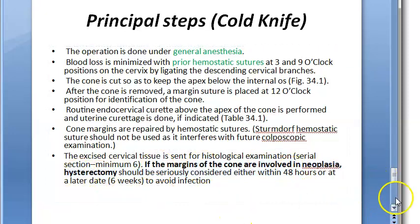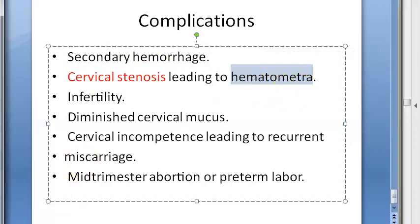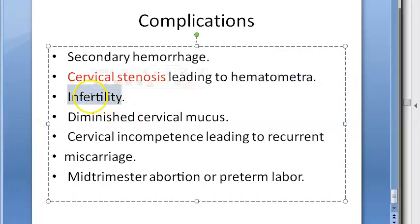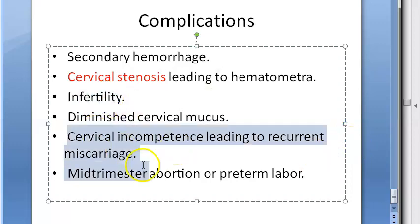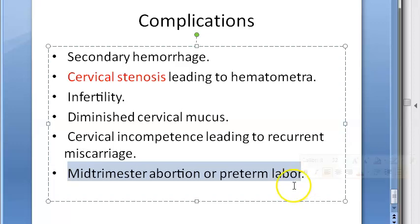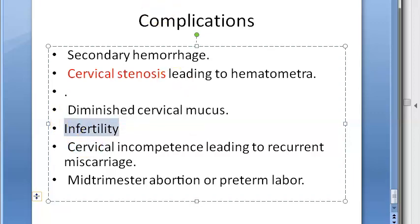Complications of cone biopsy include: secondary hemorrhage, cervical stenosis leading to hematometra (blood collection in the uterus), infertility, diminished cervical mucus, cervical incompetence leading to recurrent miscarriage, mid-trimester abortion, and preterm labor. Most of the serious complications are related to pregnancy outcomes.